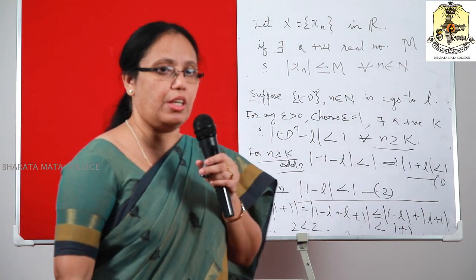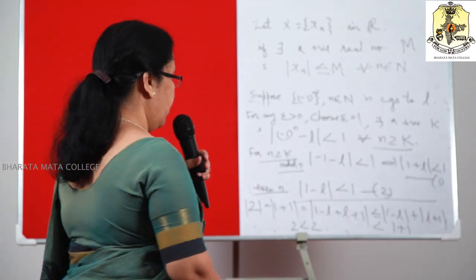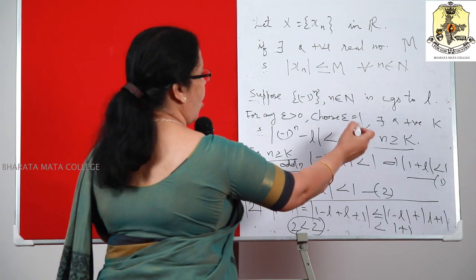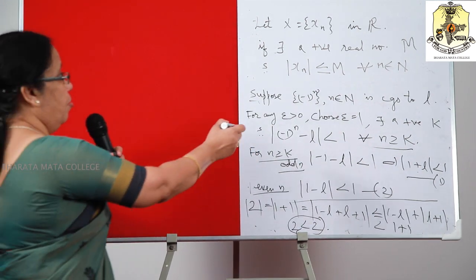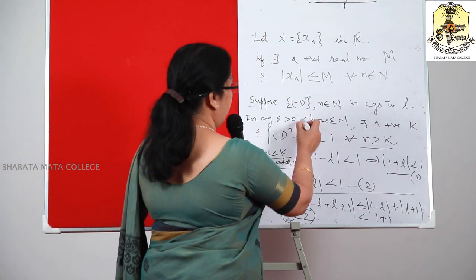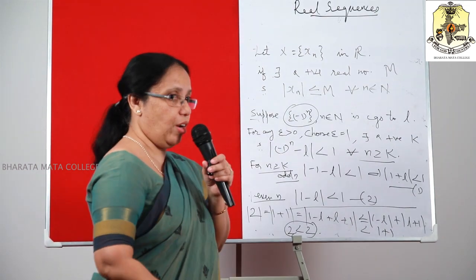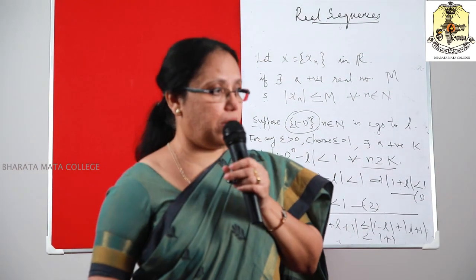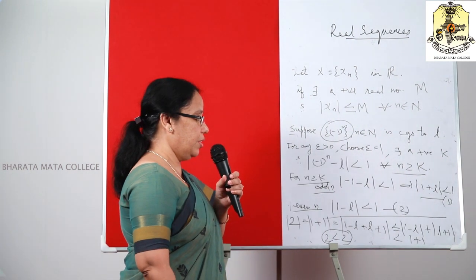Since 2 cannot be less than 2, this is illogical. That means there does not exist a real number L such that the sequence {(-1)^N} converges to it. Therefore the sequence {(-1)^N} cannot be a convergent sequence. This shows that every bounded sequence need not be a convergent sequence.